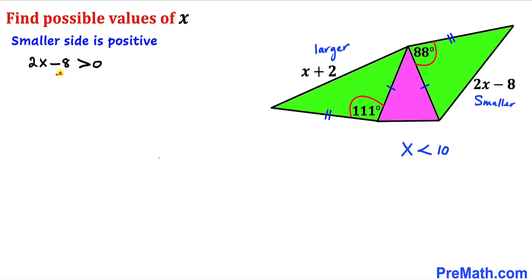Let's add 8 on both sides and we can see that this cancels out. So we ended up with 2x is greater than 8. Let's divide both sides by 2. So therefore our x value turns out to be greater than 4. This is another inequality.